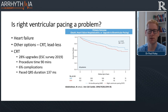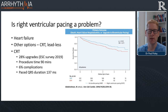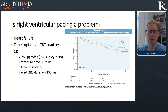Options beyond RV apical pacing include leadless pacing and cardiac resynchronisation. Looking at the ESC 2019 survey, about 30% of patients undergoing CRT were upgrades from a pre-existing RV apical system — associated with around 90 minutes procedure time, approximately 6% complications, and a paced QRS of 137 milliseconds. This suggests that implanting a physiological pacing system from the start could reduce the risk of patients needing an upgrade.